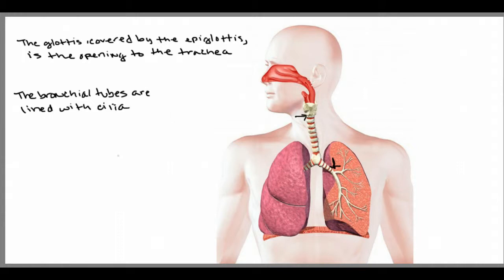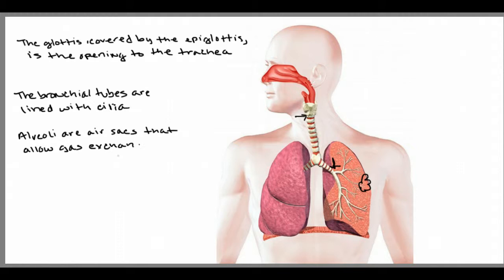At the end of the bronchial tubes are tiny air sacs called alveoli. The alveoli allow gas exchange — so gases like oxygen and carbon dioxide — with the bloodstream.